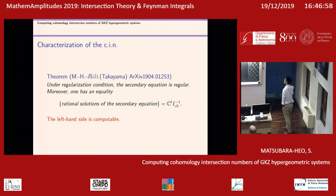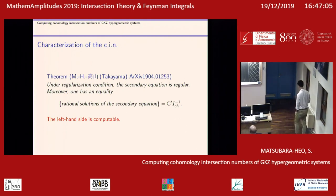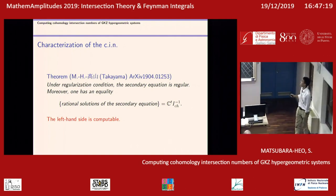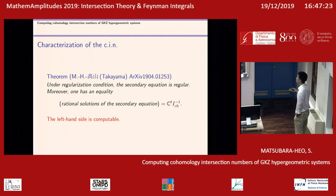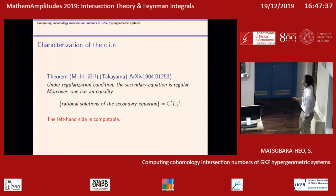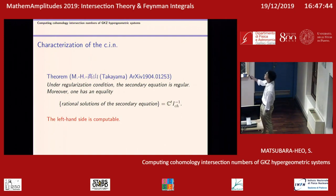The first main result of this talk is a characterization of the transpose inverse of the cohomology intersection matrix in terms of this differential equation. Under the regularization condition, the secondary equation is regular (Fuchsian). Moreover, any rational solution of the secondary equation is, up to constant multiplication, equal to the transpose inverse of the cohomology intersection matrix. At this stage, the left-hand side has no geometry — it is just about solving a differential equation.